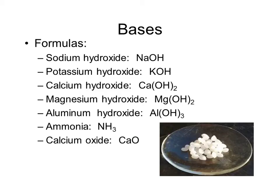We've got some formulas to look at, and most of these formulas end in OH, which explains why that part breaks off once put in water. Sodium hydroxide — remember, hydroxide is a polyatomic ion — we name it using the ionic bond rules we already learned. Sodium hydroxide is most often used in drain cleaners like Drano, and also in paint remover. Potassium hydroxide is used in the same things as sodium hydroxide, but it's more expensive, so you won't see it as often.